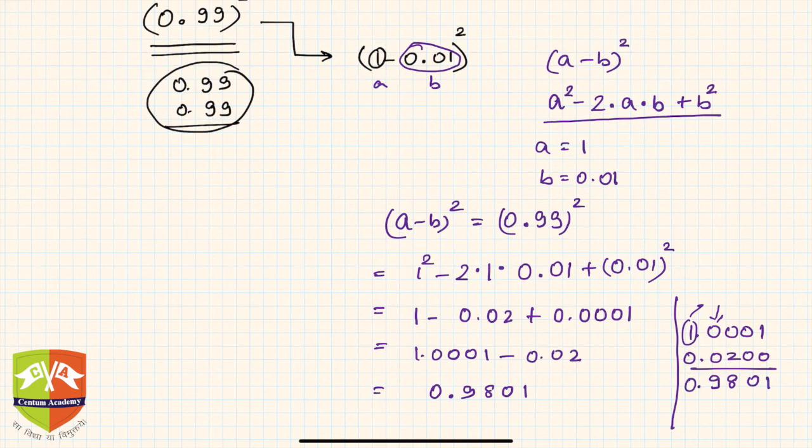So it is nothing but 0.9801. This is the answer to this particular problem. Hence we learned using an identity to solve a mathematical arithmetic problem.